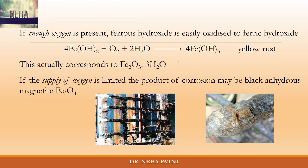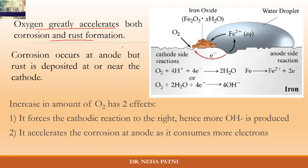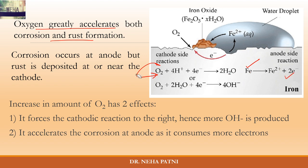If enough oxygen is supplied, ferrous hydroxide converts to ferric hydroxide — the yellow rust. If oxygen supply is limited, a black magnetite compound forms. Increasing oxygen drives the cathodic reaction forward, producing more hydroxide and increasing corrosion. This also increases the demand for electrons, forcing the anodic reaction to accelerate to supply them — a demand-and-supply effect that overall increases the corrosion rate.